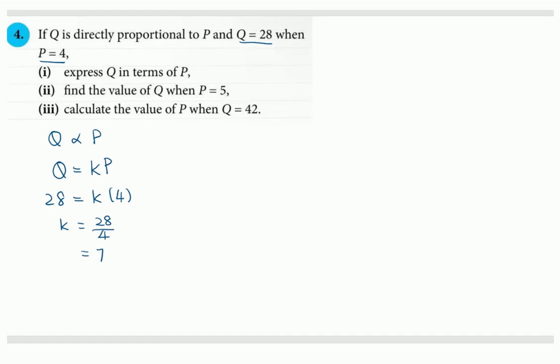Now that we have found k, we should put it back into our equation. So Q will be 7P. And that will be the answer for part 1. And we will use this equation for the rest of the parts.